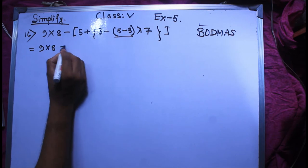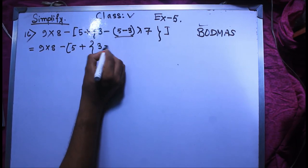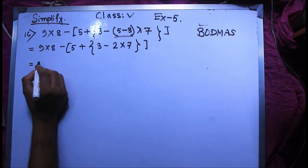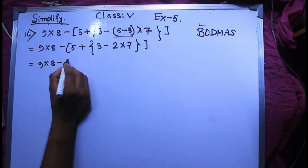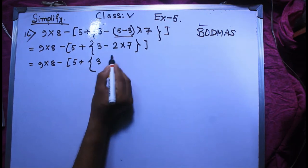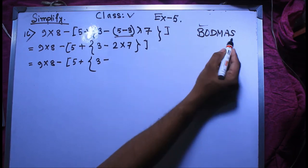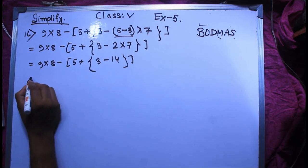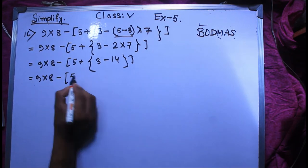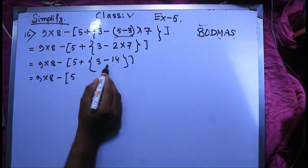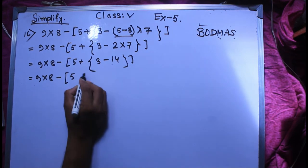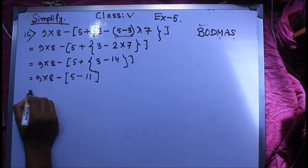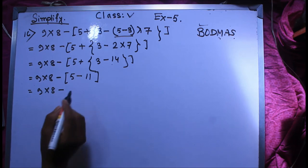I'm gonna do 9 into 8 minus 5 plus root over 3 minus 5 to get 3 minus 2 into 7. Second bracket, third bracket. So I'm gonna keep the second bracket as 9 into 8 minus third bracket 5 plus 3. Multiple here to start, subtraction here, then multiple here. The second bracket is 9 into 8 minus third bracket. I can't get 5 plus 7 to get 3, so 14 to get 3 minus, the level of minus 11.